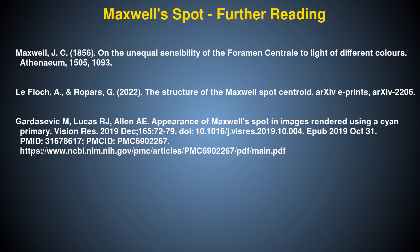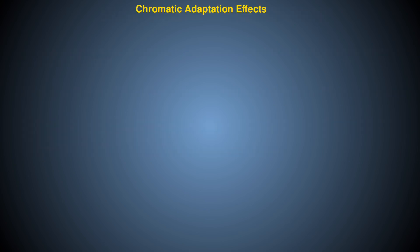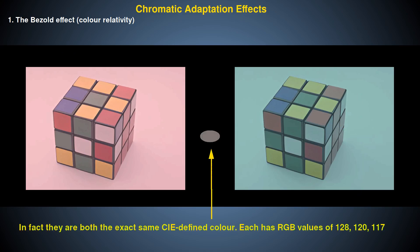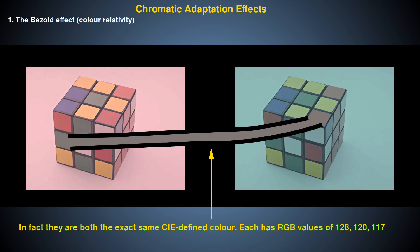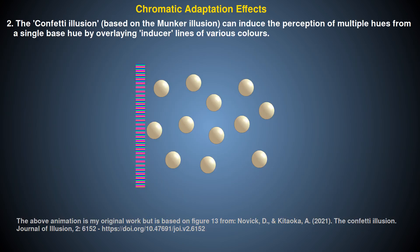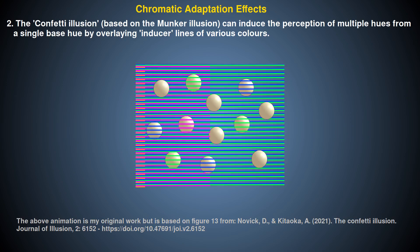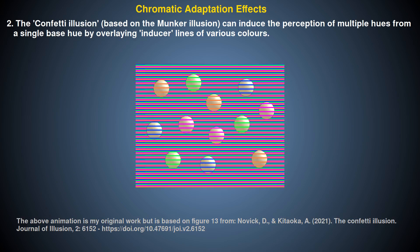Maxwell postulated that this could be related to the preferential absorbance of blue wavelengths by the yellow pigment of the macula. We now know this is also partly mediated by a relative lack of blue-receptive cones in the fovea. Another colour perception-altering phenomenon is chromatic adaptation effects, which make us perceive EM radiation of the same wavelength profile and intensity as different colours depending on colour context — sometimes referred to as colour relativity or the Bezold effect. Various optical illusions result from this, such as the Munker illusion and the Confetti illusion described by David Novick and Akiyoshi Kitaoka, where balls of the same colour appear as different colours when partly overlaid with differently coloured stripes.